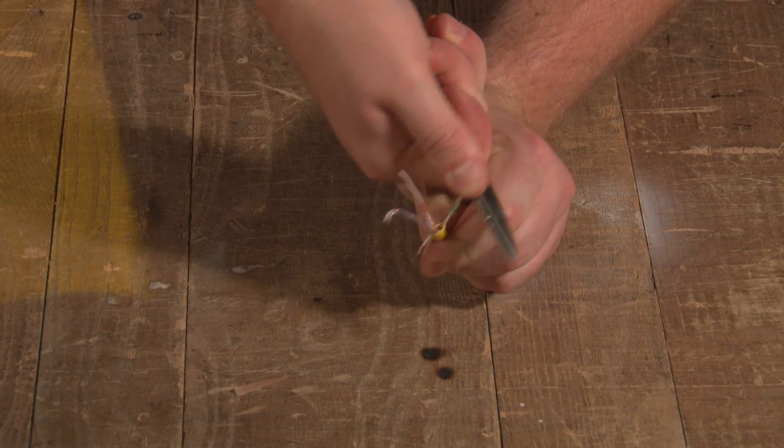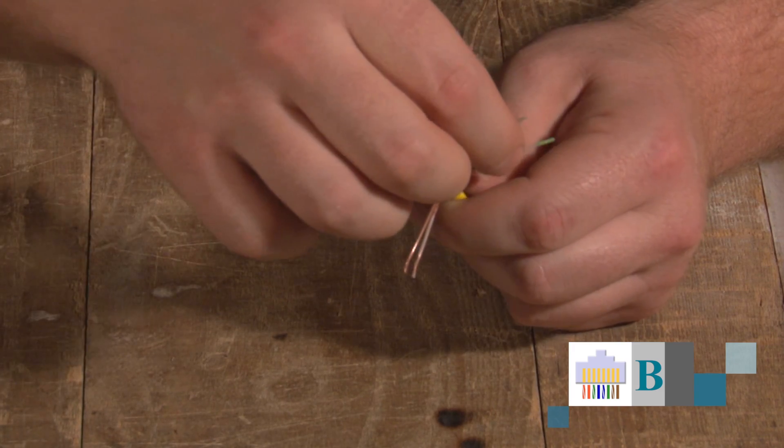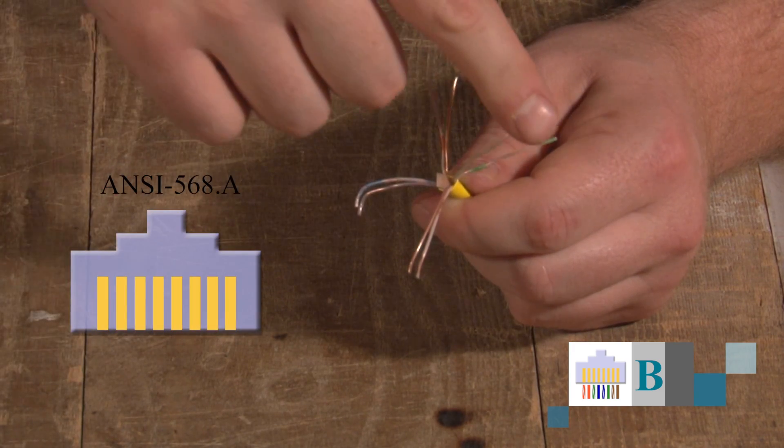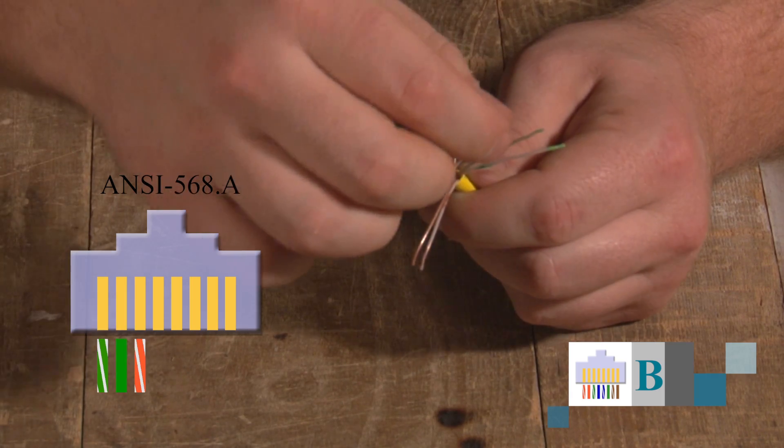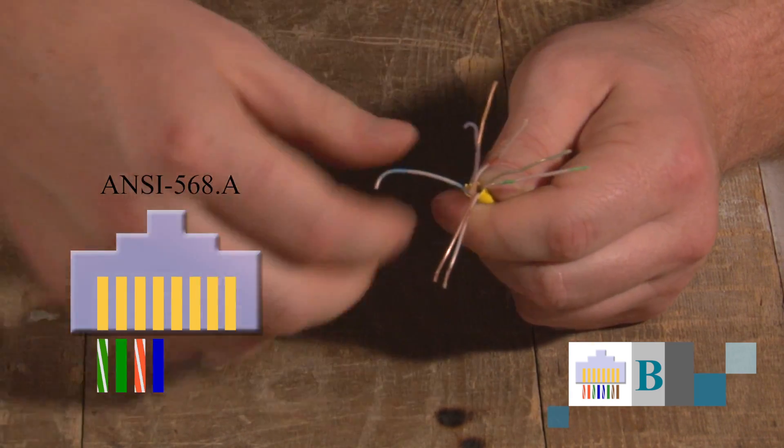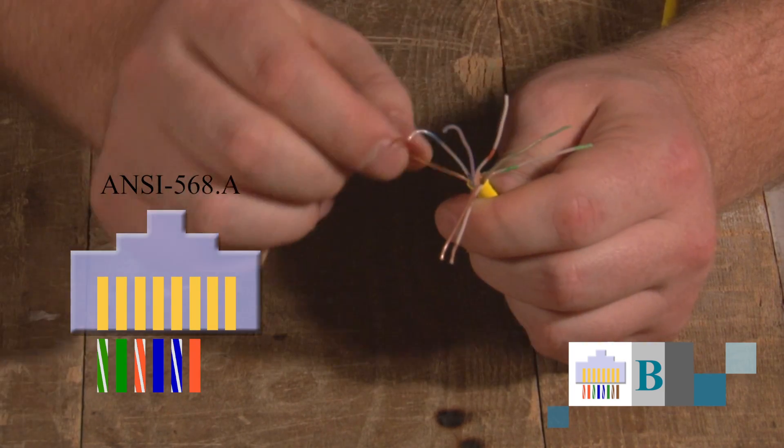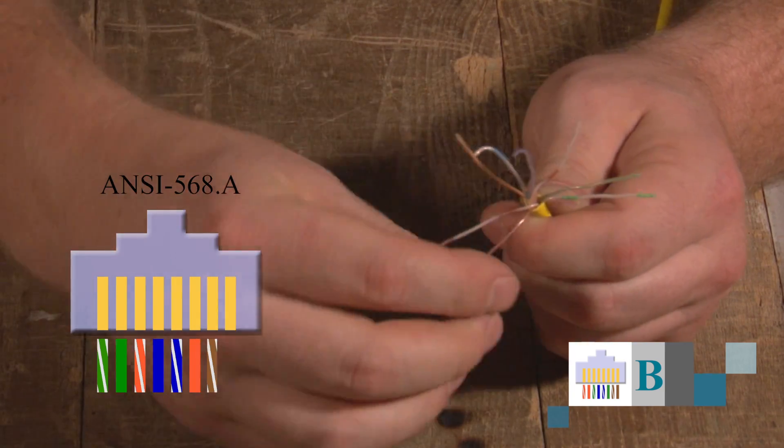For the B pin assignment, click the link on the screen. Organize them from left to right. Check for A: white-green, green, white-orange, blue, white-blue, orange, white-brown, brown.